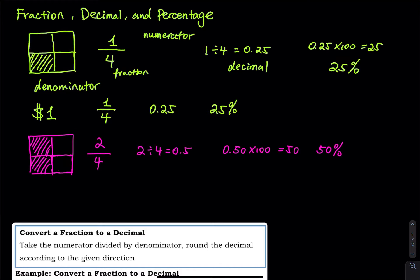Now, 2 over 4 is 50%. Since 4 is the same thing as 2 times 2, as long as you divide the top and bottom by 2 — 2 divided by 2 equals 1, 4 divided by 2 equals 2 — you get 1 half. 1 half equals 0.5, and half of 1 dollar is 50 cents. So 50 cents is 50% of 1 dollar. That's the relationship between fraction, decimal, and percentage.